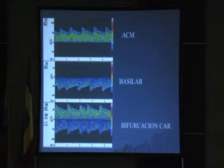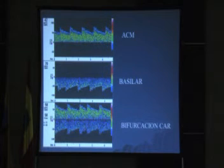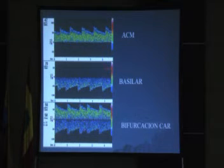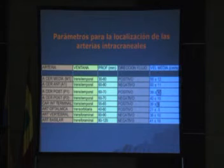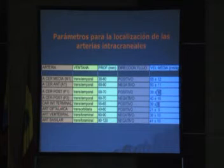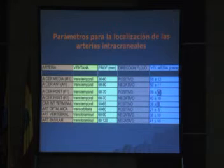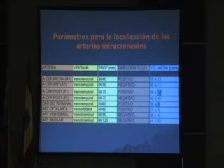En el estudio de Doppler, dependiendo del vaso que estemos examinando, vamos a ver un flujo positivo a determinada profundidad para la cerebral media, y dependiendo la ventana, un flujo tanto positivo como negativo. Todo eso está preestablecido con diferentes profundidades por tipo de ventana; vamos a encontrar una arteria con flujo positivo o negativo y una velocidad media constante medida en centímetros por segundo. Requiere entrenamiento y una curva de aprendizaje larga, pero no es nada complejo.